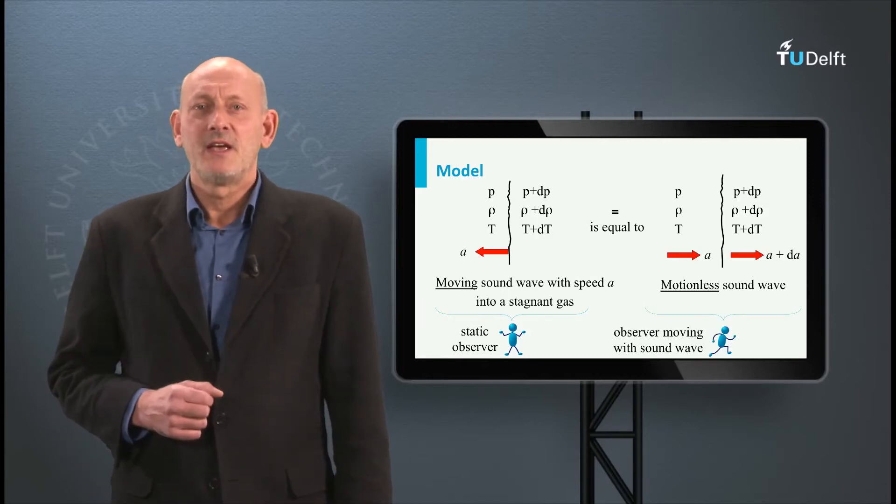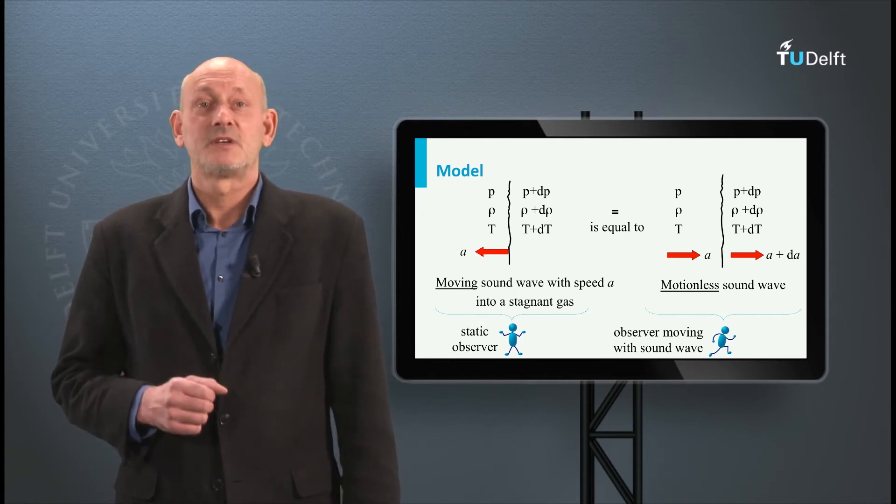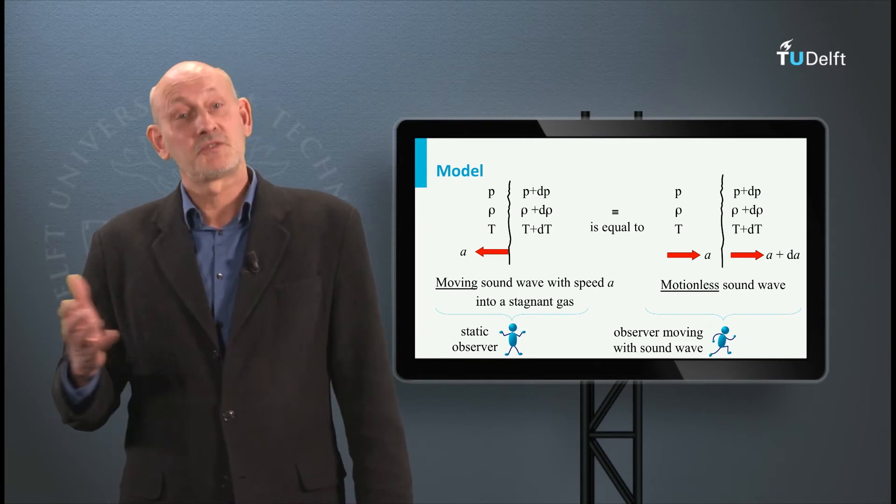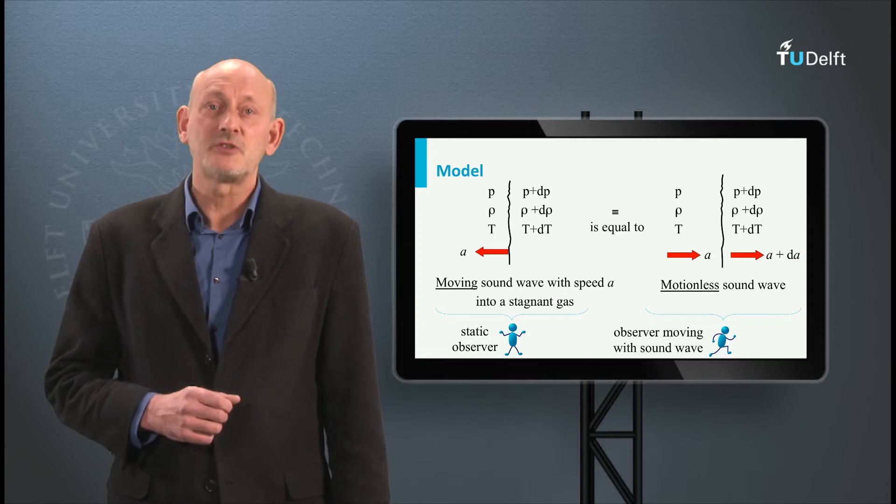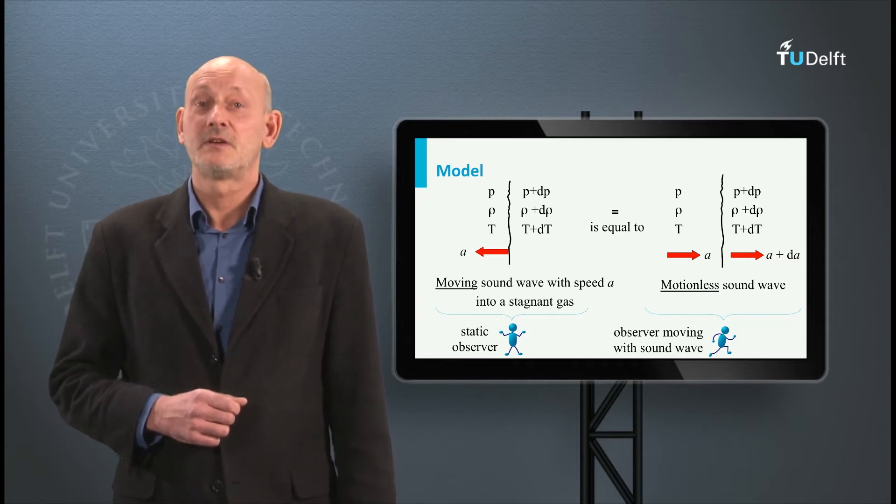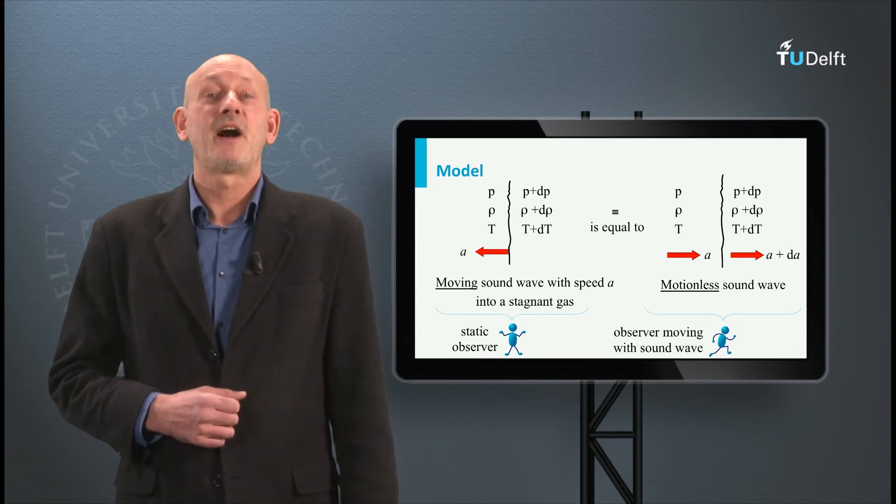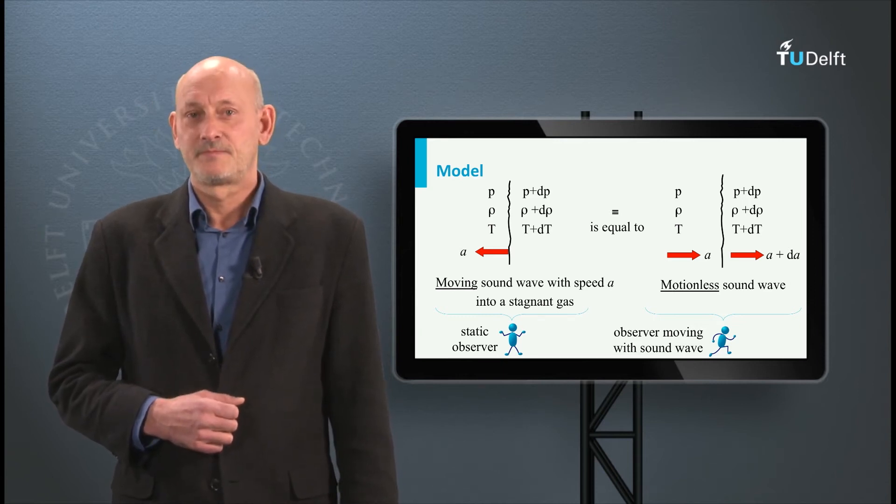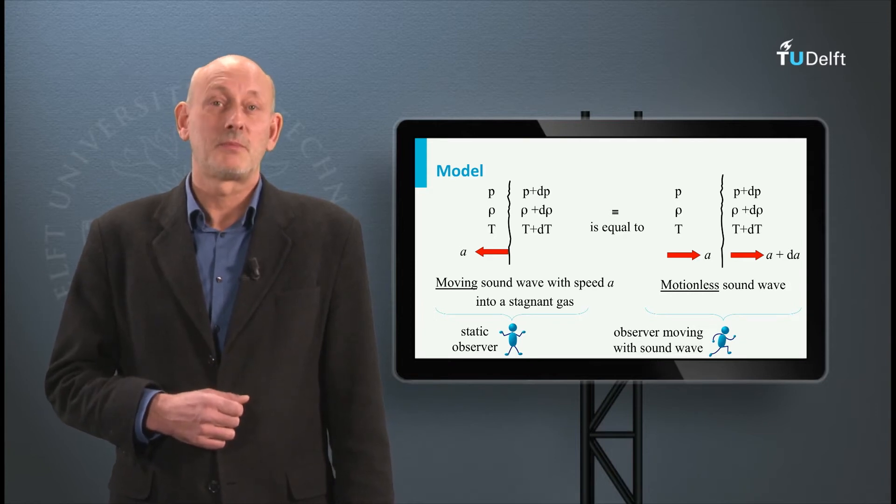Equal to this is a situation where the observer is moving with the wave, so the wave is motionless and the gas is flowing by with speed A. Still, on the left-hand side we see the undisturbed pressure, density and temperature and on the downstream side of the wave we find the changed properties. Note that also the speed has changed into A plus dA.